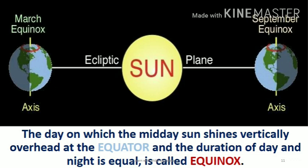The day on which the midday sun shines vertically overhead at the equator and the duration of the day and night is equal is called Equinox. There are two types of equinoxes: Spring Equinox, which is on 21st March, and Autumn Equinox, which comes in the month of September, that is 23rd September.